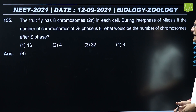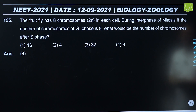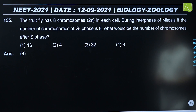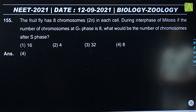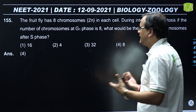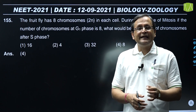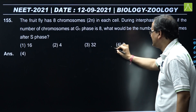Question 155: The fruit fly has 8 chromosomes (2n) in each cell. During interphase of mitosis, if the number of chromosomes at G1 phase is 8, what would be the number of chromosomes after S phase? We know that in S phase, DNA replication occurs - DNA content doubles from 2C to 4C - but the chromosome number remains the same. So the answer is 8, meaning option 4 is the correct answer.